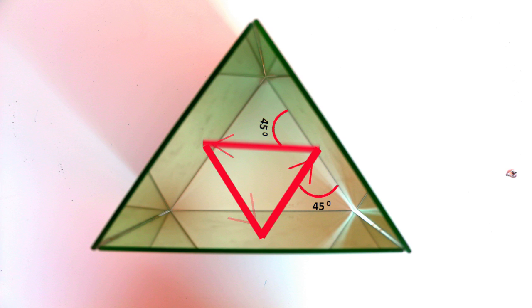As a result, the reflected beam from the first mirror incident at 45 degree angle on the second mirror and this process will repeat over and over again from second to third mirror, third to first mirror, first to second mirror and so on.